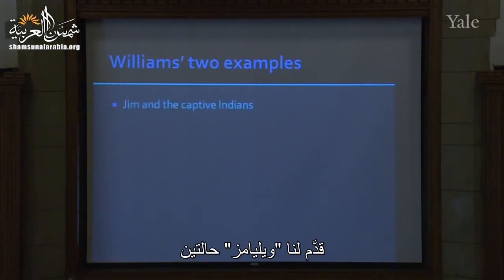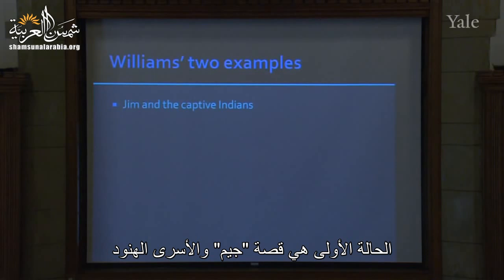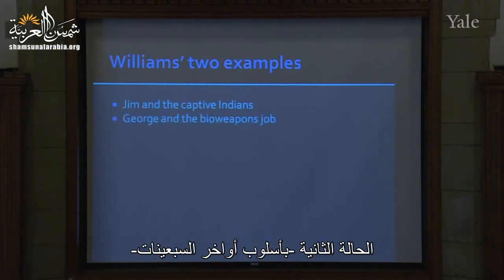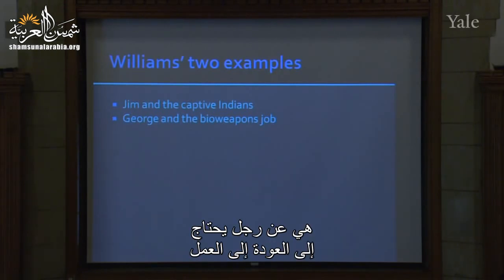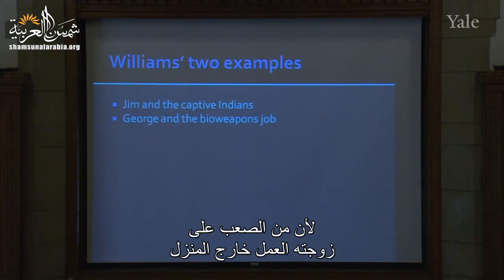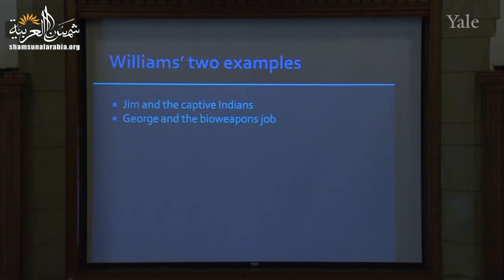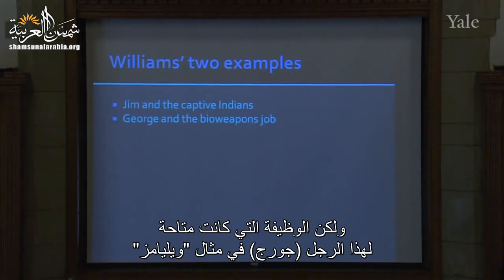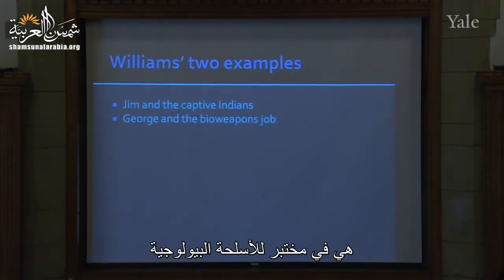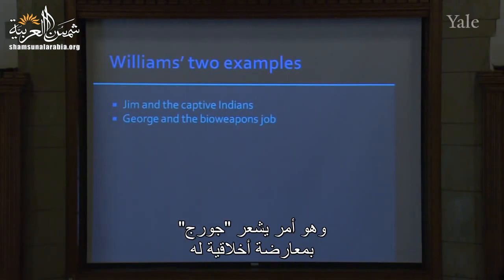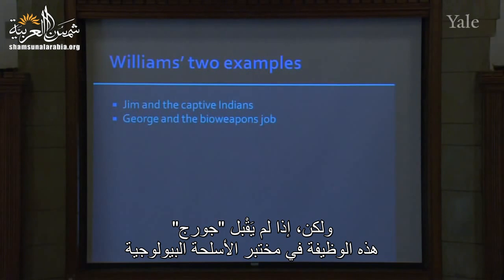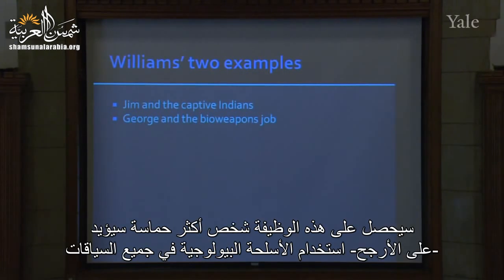Williams presents us with two cases. The first is the case of Jim and the captive Indians. The second, in high-70s fashion, concerns a man named George who needs to return to work. The work he's offered is in a bioweapons lab, something to which George feels moral opposition. But if George doesn't take the job, a much more gung-ho person — someone likely to advocate the use of bioweapons in all sorts of contexts — will get the job instead.